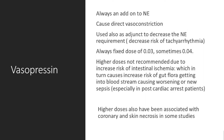Why is mesenteric ischemia bad? Decreased mesenteric perfusion causes translocation of gut flora into the bloodstream. A patient in shock — even non-septic shock — can become septic if you cause mesenteric ischemia through excessive vasoconstriction from pressors, as gut bacteria translocate from the intestines into the blood, causing bacteremia and septic shock. So mesenteric ischemia is a serious problem. Remember: vasopressin fixed dose of 0.03 units only.